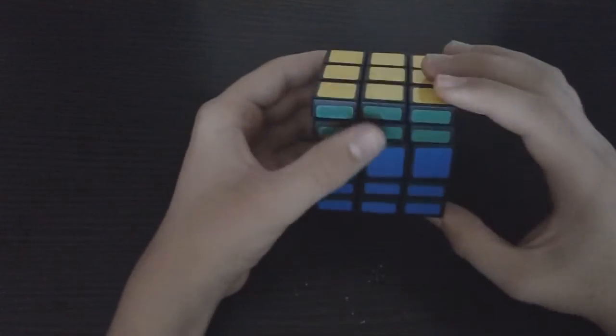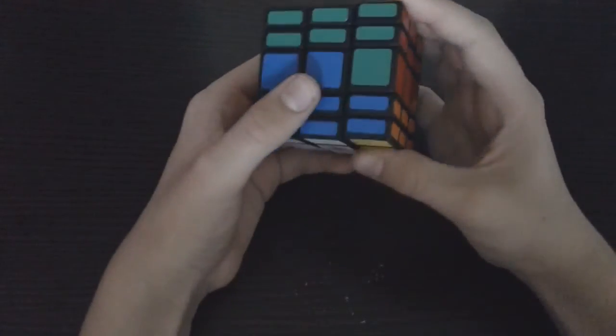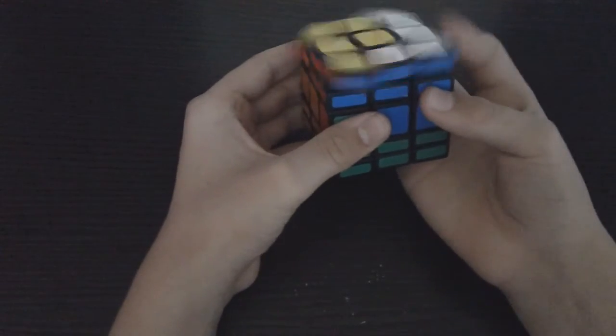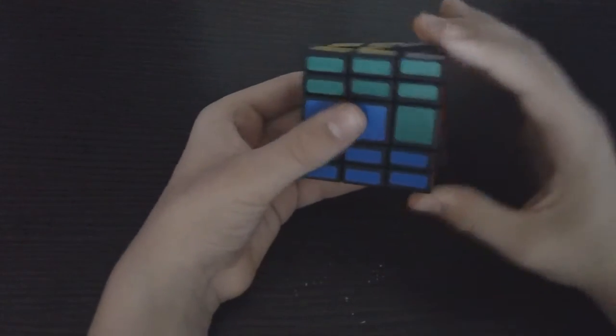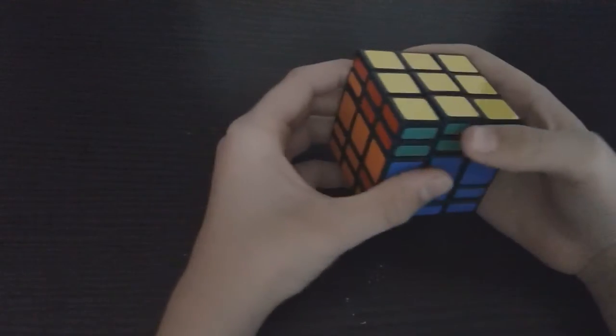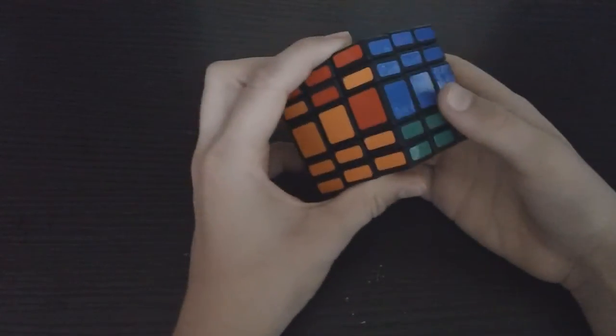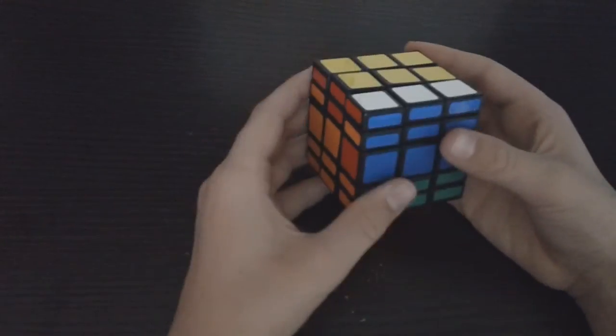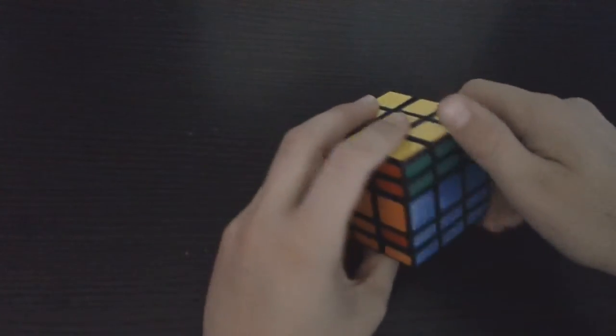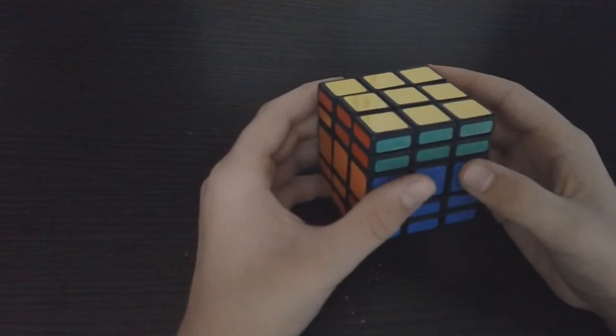So the algorithm for the parity is UU2, R2, F2, UU2, U2, F2, R2, and then you do one more, F2. Now that switched these two, and that's the parity algorithm. And then I'm just going to do it backwards. Let's see if I'm trying to remember it, actually. But that is the parity algorithm.